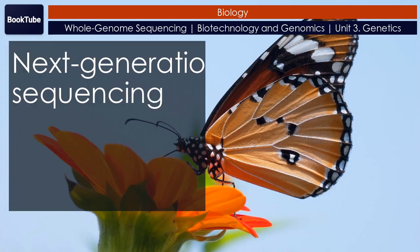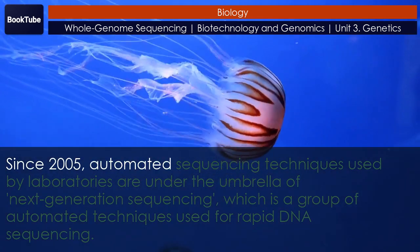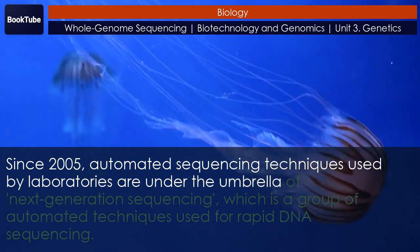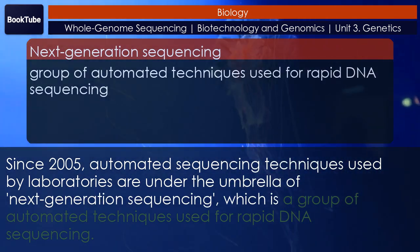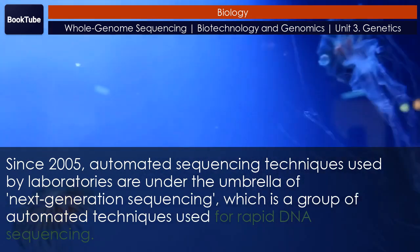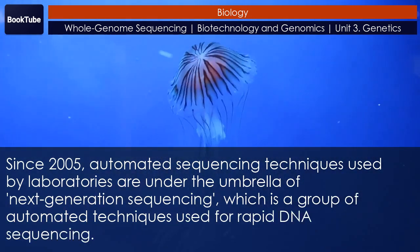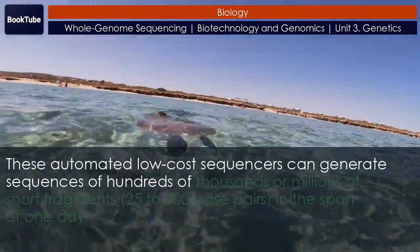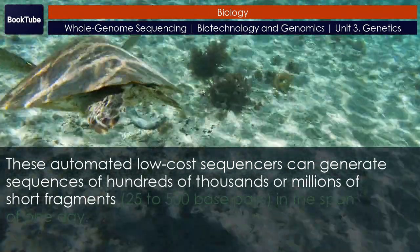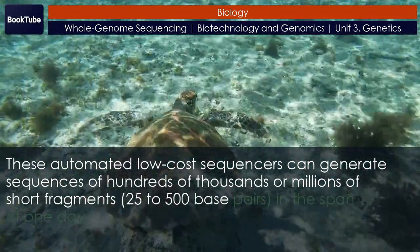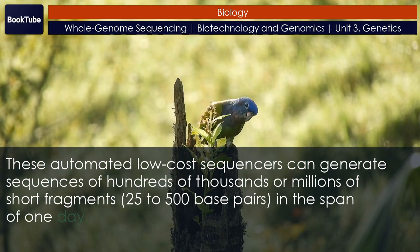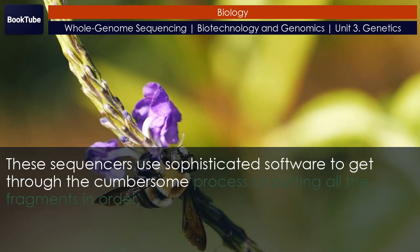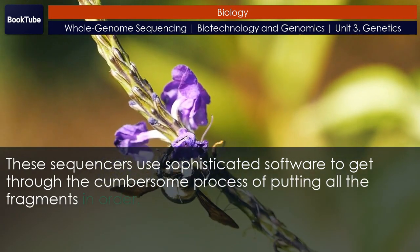Next-generation sequencing. Since 2005, automated sequencing techniques used by laboratories are under the umbrella of next-generation sequencing, which is a group of automated techniques used for rapid DNA sequencing. These automated low-cost sequencers can generate sequences of hundreds of thousands or millions of short fragments — 25 to 500 base pairs — in the span of one day. These sequencers use sophisticated software to get through the cumbersome process of putting all the fragments in order.